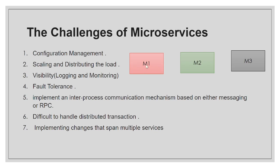Next is implementing inter-process communication, whether based on messaging or RPC — what approaches do we need when calling from one microservice to another? And it is also difficult to handle distributed transactions. If M1 has its own database and M2 has its own database and you want to manage a distributed transaction across them, how will you achieve that? Again, that is a problem.